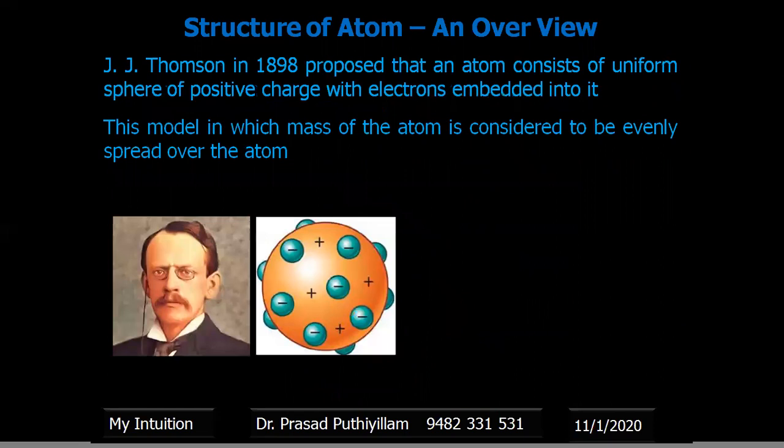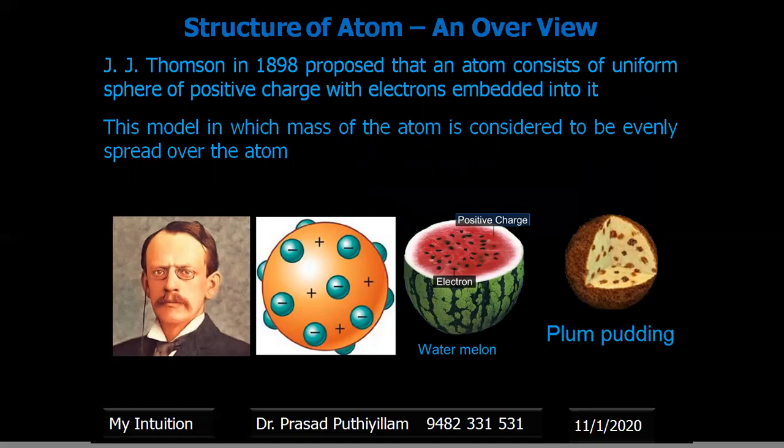J.J. Thomson in 1898 proposed that an atom consists of a uniform sphere of positive charge with electrons embedded into it. In his model, the mass of the atom is considered to be evenly spread over the atom. His model was compared to that of a watermelon or plum pudding, where the juicy part represents the positive charge and the seeds represent the electrons.